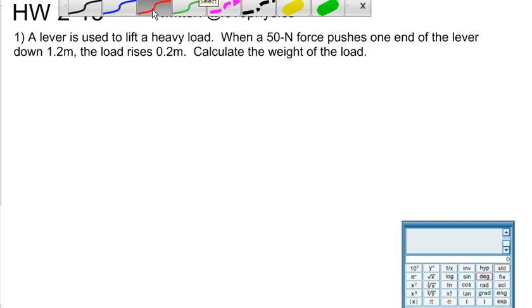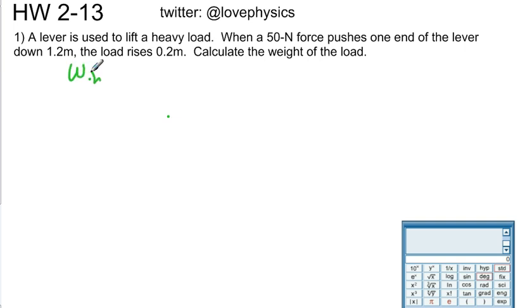The first problem reads: a lever is used to lift a heavy load. When a 50 Newton force pushes one end of the lever down 1.2 meters, the load rises 0.2 meters. The first thing that you need to realize here in all the mechanical advantage problems is the work in equals the work out. So I think it's always helpful to draw a picture.